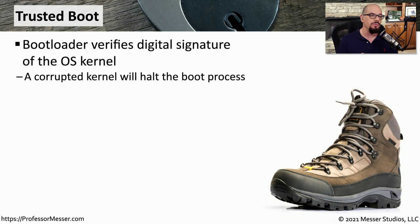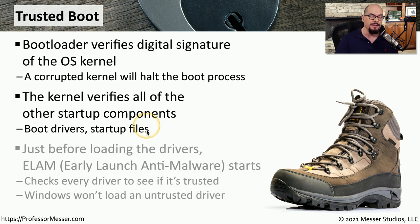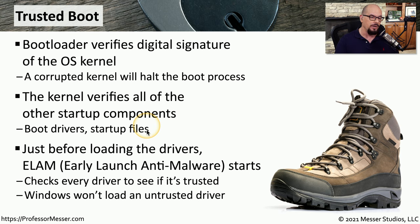Once the secure boot process is complete, we move to the trusted boot process. During this process, the bootloader — which we now know has not been changed — verifies the digital signature of the operating system kernel, ensuring the kernel has not been modified by any malware. If there has been any change, the boot process will stop. The kernel then verifies other parts of the OS, such as boot drivers and startup files. Just before the OS starts loading hardware drivers, it starts a process called ELAM — early launch anti-malware — checking every driver's digital signature. If a driver fails verification or has an untrusted signature, it will not be loaded.